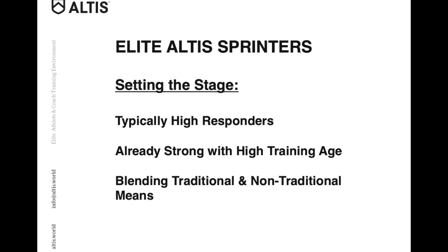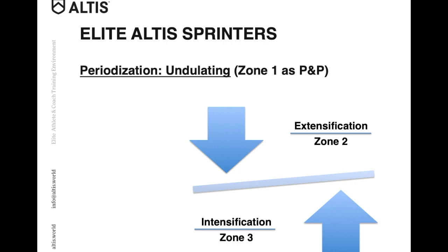The last group I'll touch on is the Elite Altus Sprinters. This group are typically high responders with already a high training age, and that means blending more non-traditional means of strength and power training with traditional means. Because of their high-responding nature, it's helpful to alter the stimulus a little more regularly than with the previous groups, which lends itself to more of an undulated periodization approach. We incorporate Zone 1 as well as what we call potentiation preparation — usually on Monday and Thursday with dynamic effort work — while the big days on Tuesday and Saturday follow an undulating scheme of a block of extensification or Zone 2 repeated effort, and then a block of intensification or Zone 3 max strength.